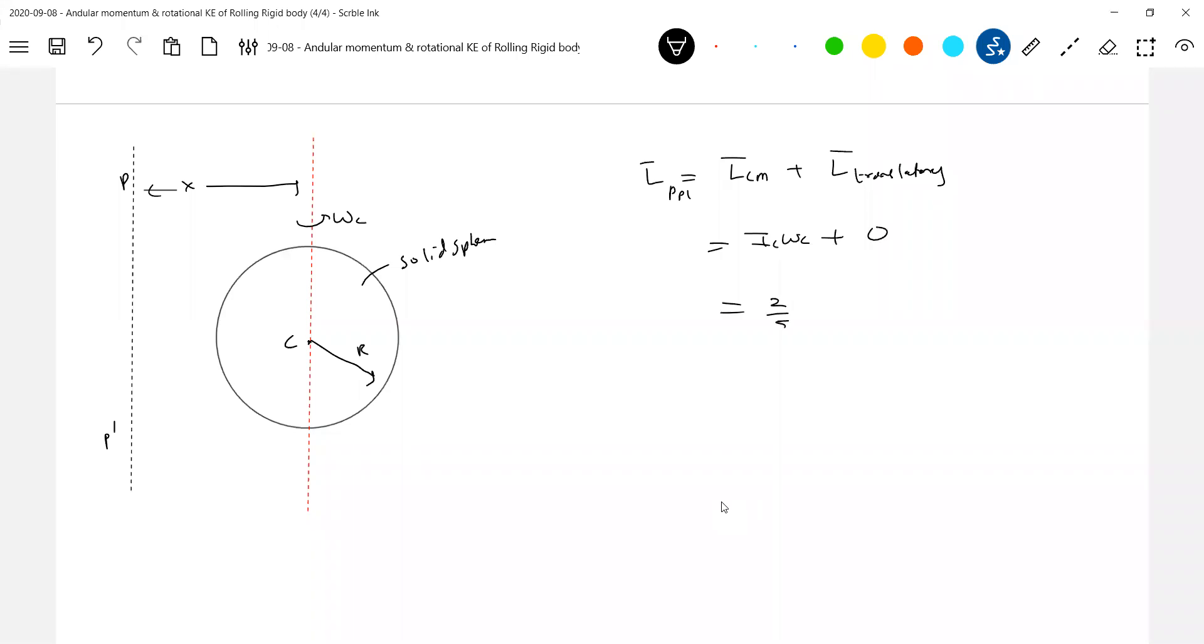So what is Ic? 2 by 5 MR² Omega. What about the direction? Plus j cap if you want, you can write it.